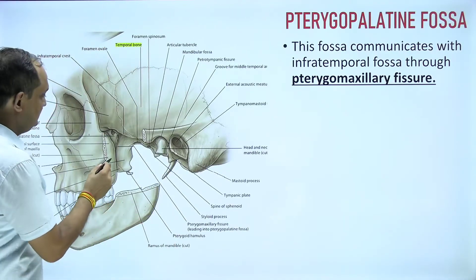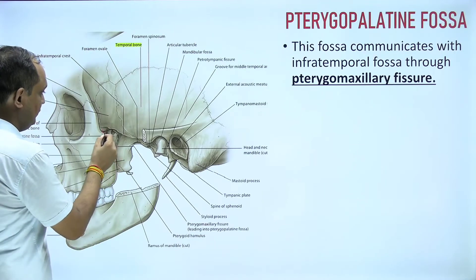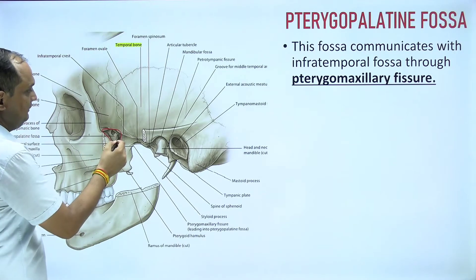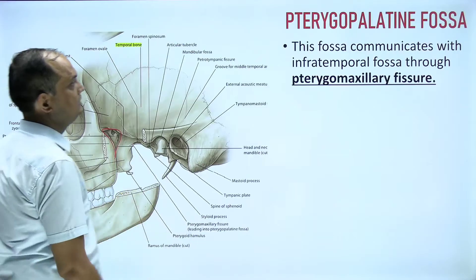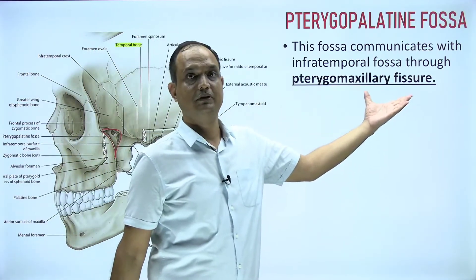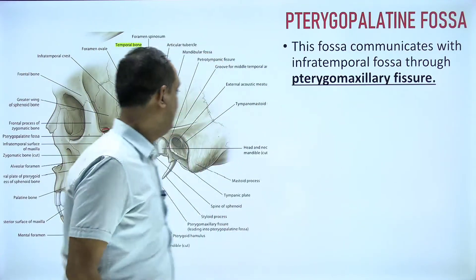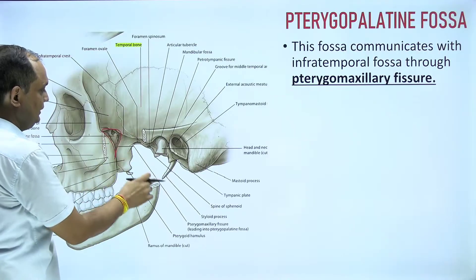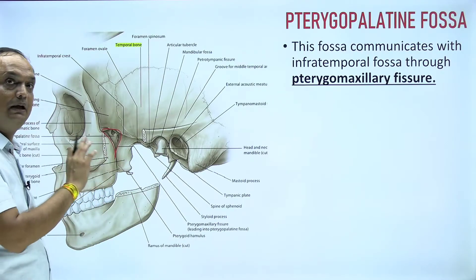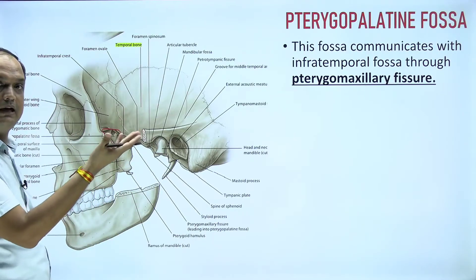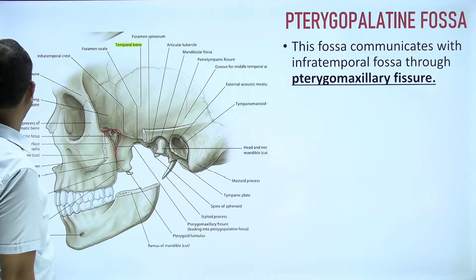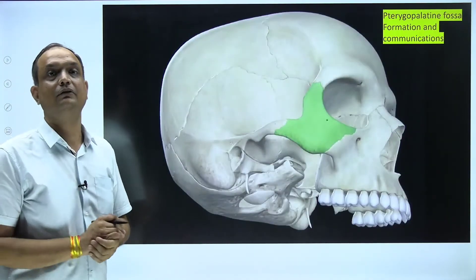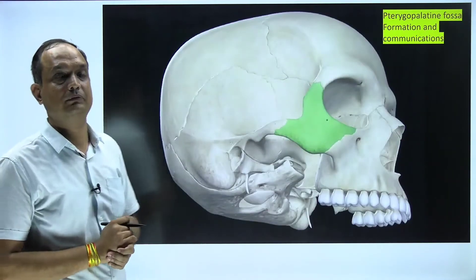Now, the communication of the pterygopalatine fossa: the gateway on the lateral side is known as the pterygomaxillary fissure, through which the pterygopalatine fossa communicates with the infratemporal fossa, which lies deep to the ramus of mandible.